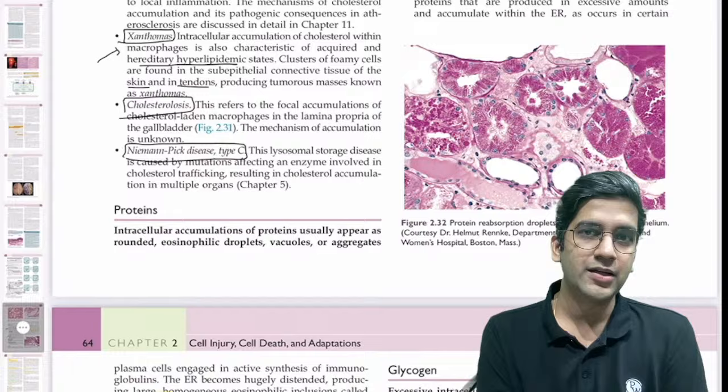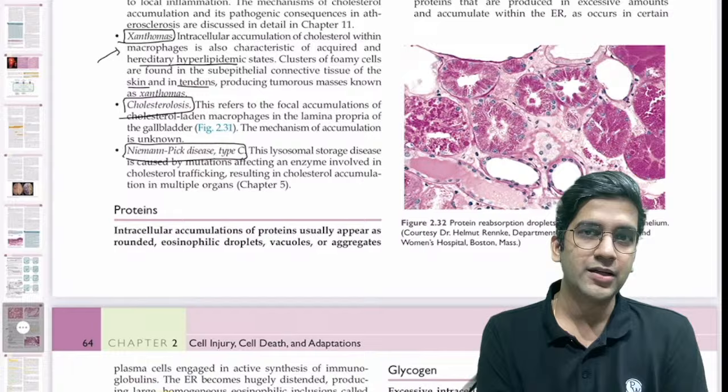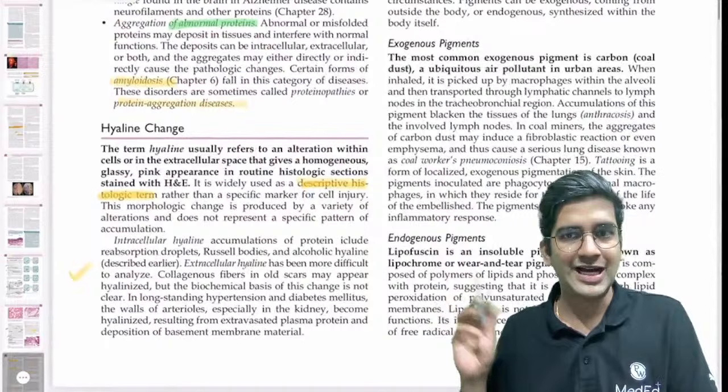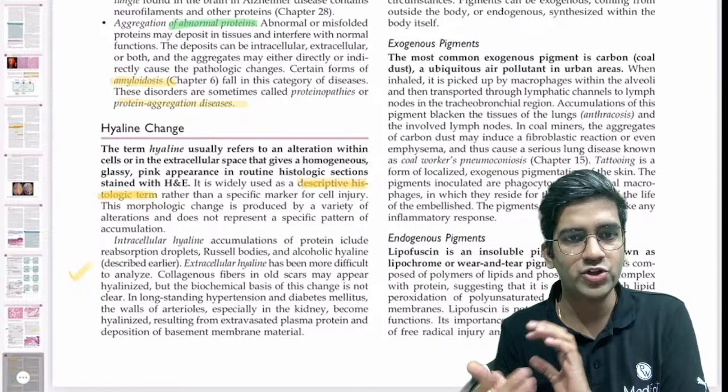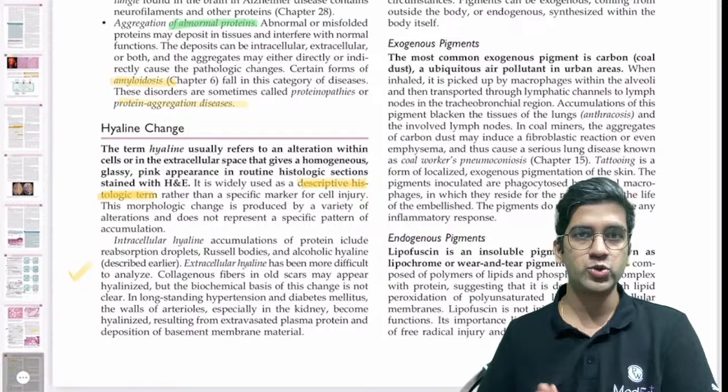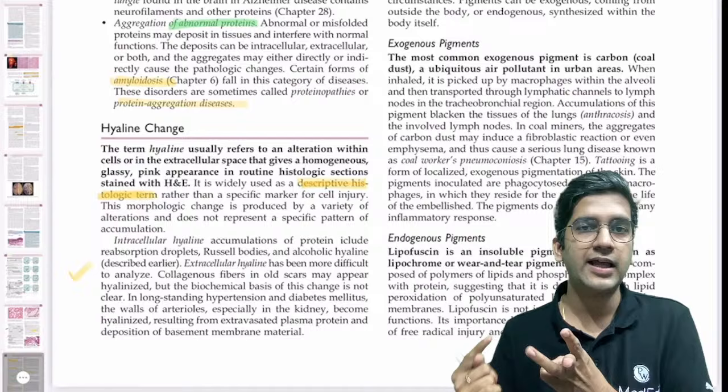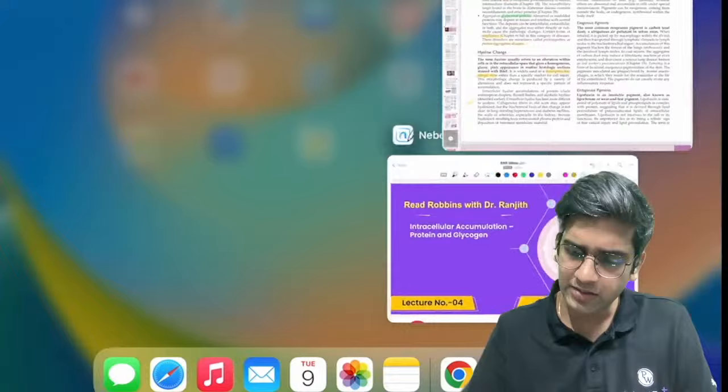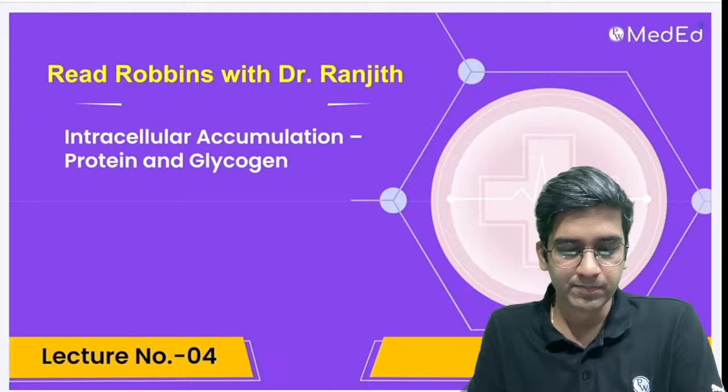So we're going to go with protein and glycogen accumulation. If you look at Robbins, you will see one more heading called Hyaline change. Hyaline is a microscopic terminology — it's interchangeably used — and we'll definitely learn about Hyaline change. We're going to cover three subheadings in Robbins today: one is about protein, one is about Hyaline, and also about glycogen. This is lecture number four; the other ones are available on YouTube. Today we're going to see about intracellular accumulation — protein as well as glycogen.